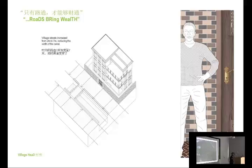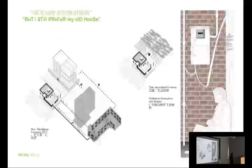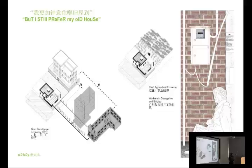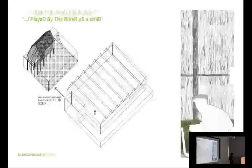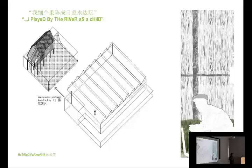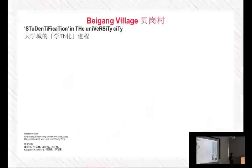What we started mapping materially was how the village architecture had changed over time. I love this quote from the village head: 'Roads bring wealth.' They changed a very canal-based, water-based village and built roads along the canals. There's also still a very nostalgic narrative from some of the older inhabitants who dealt specifically with the river, and an awareness about environmental degradation due to nearby factories.